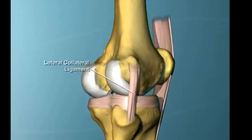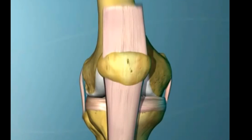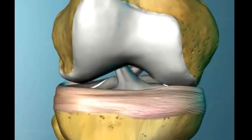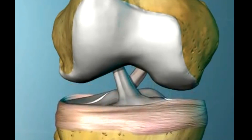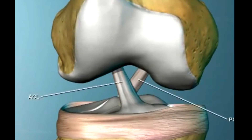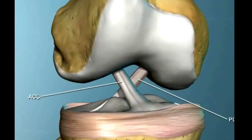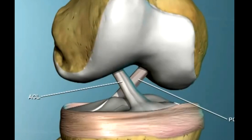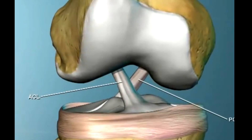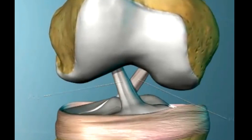Let's look at the front view of the right knee. We have two ligaments that cross in the middle of the knee. These are called the cruciate ligaments because they cross. We have first the anterior cruciate ligament, and then running behind it, its partner, the posterior cruciate ligament, or PCL.